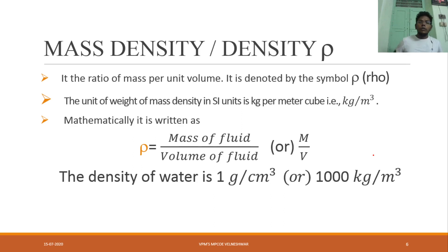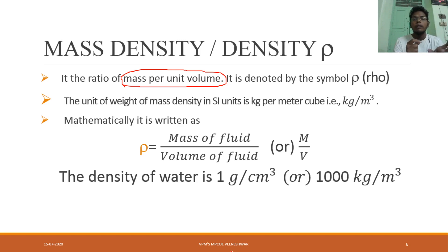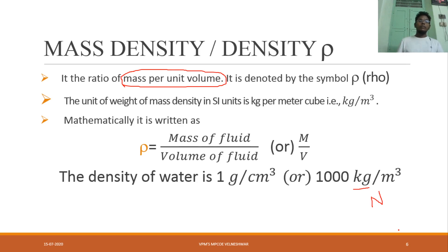Mass density is the ratio of mass per unit volume. We have two types — mass and weight. When considering mass, the value will be in kg per meter cube. When considering weight, the value will be in Newtons. Mass is in kilograms and weight is in Newtons. In a coming lecture I will also cover weight density.